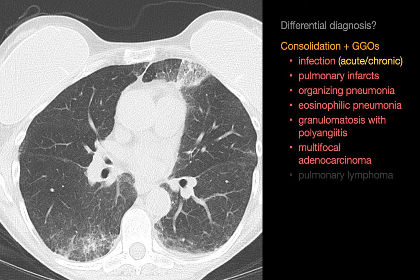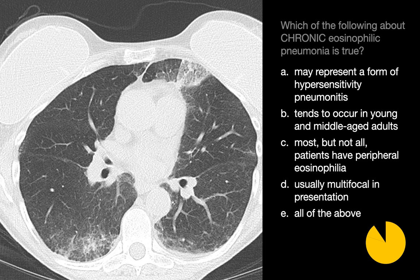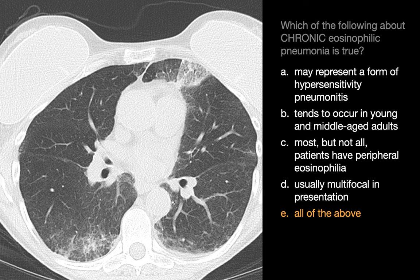This particular case ended up being an example of chronic eosinophilic pneumonia. Which of the following statements about CEP is true? It turns out all four statements are true: it may represent a form of hypersensitivity pneumonitis; it generally occurs in young and middle-aged adults; most patients have peripheral eosinophilia; and the presence of lung opacities is usually multifocal.